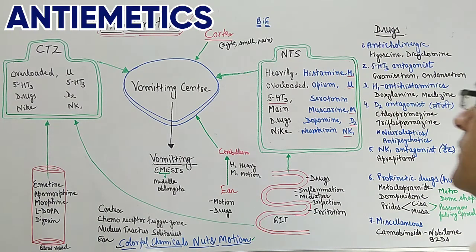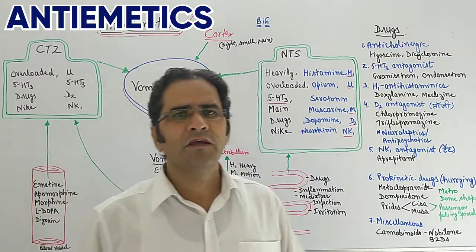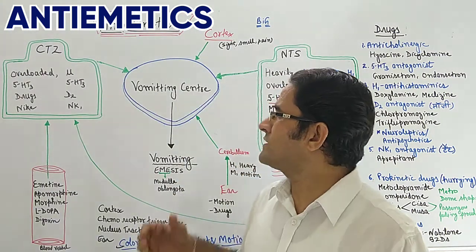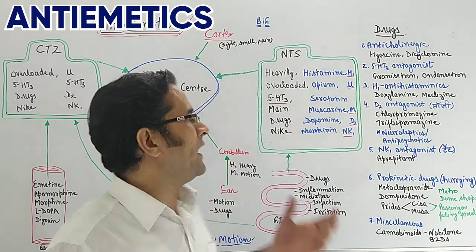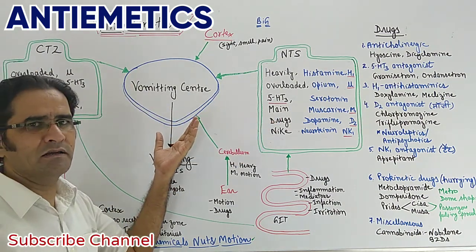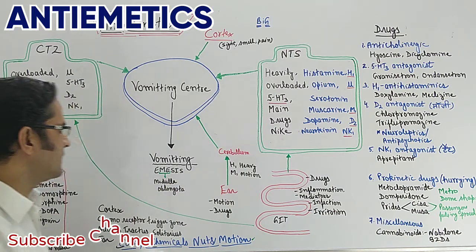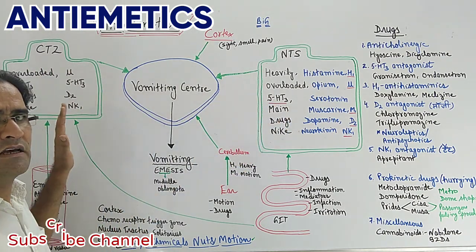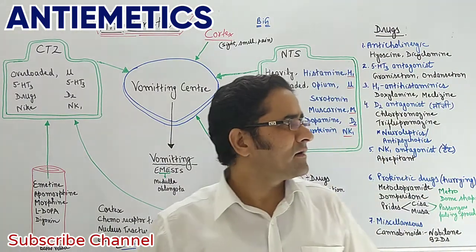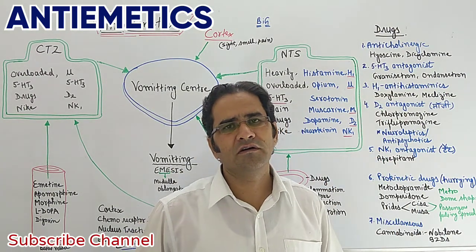Hello friends, welcome to the video. Today's video is based on Anti-Emetics. These are the drugs used to control or stop vomiting. In this video we are going to see what are the causes of vomiting, why the vomiting center is stimulated, what are the different relay centers related to vomiting which send nerve impulses to the vomiting center, and which ultimately result in emesis or vomiting. We will also look at the different types of receptors located in the relay centers which, when stimulated by chemicals or drugs, lead to vomiting. Once you get an idea about the receptors, you will automatically learn the classification of Anti-Emetic drugs.